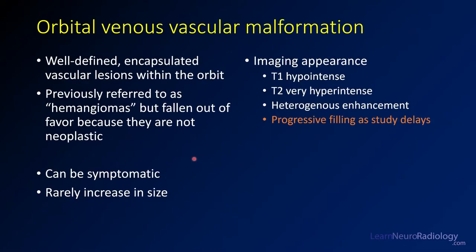This is the case of an orbital venous vascular malformation. These were previously referred to as hemangiomas, but that term is falling out of favor because they're not neoplasms. These are well-defined, encapsulated vascular lesions — abnormal veins within the orbit. They can be symptomatic, as in this case where the patient was having diplopia.